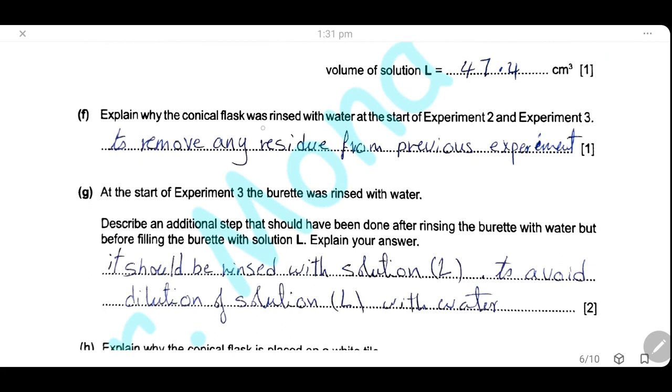Explain why the conical flask was rinsed with water at the start of experiment 2 and experiment 3. It is rinsed with water to remove any residue from the previous experiment.